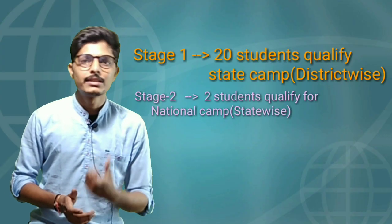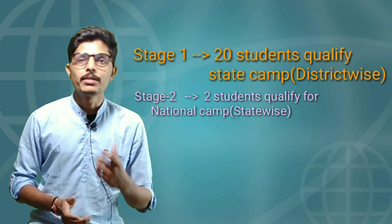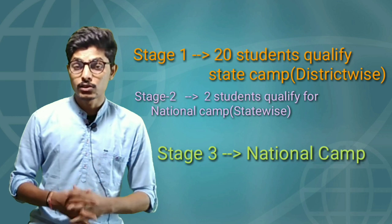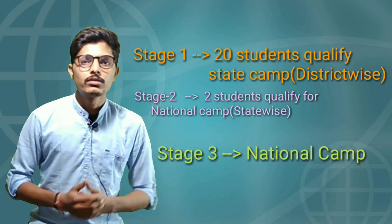Now talking about the classification of winners — basically there are three stages. The first stage is an exam of 100 MCQs that will be totally digital. The second and third stages will be the state camp and national camp. From the first level, they are selecting 20 students from each district. From the state camp, they will select two students from each state, and in the national camp, the selected students will get a task assigned by a well-known scientist of India.